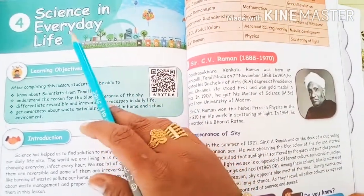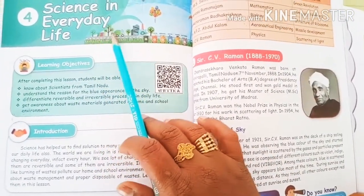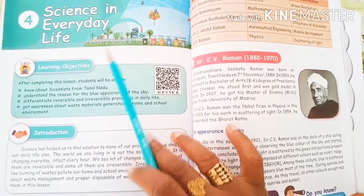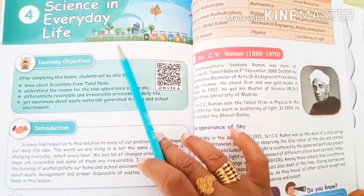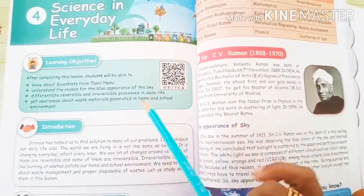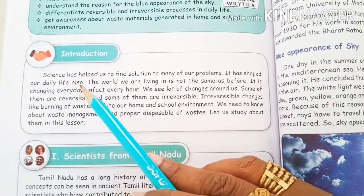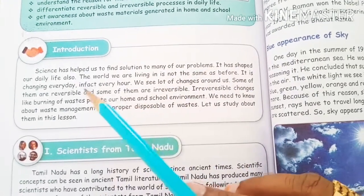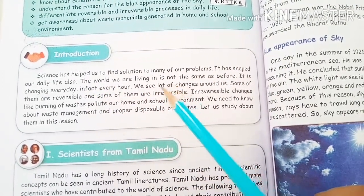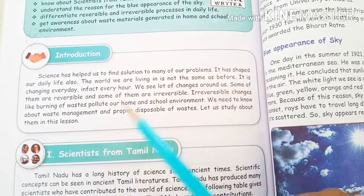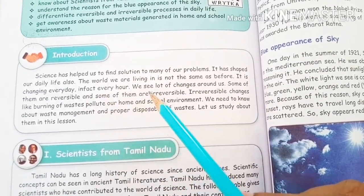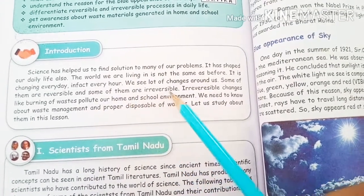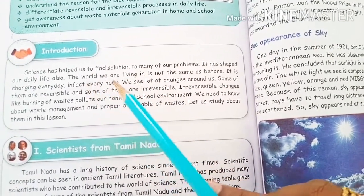Dear children, the lesson name is Science in Everyday Life. By this itself we can understand what is there in the lesson. We are going to learn about how science is useful in our daily life. Science has helped us to find solutions to many of our problems. It has shaped our daily life also. The world we are living in is not the same as before — it is changing every day. Everywhere we see a lot of changes around us. Some of them are reversible and some of them are irreversible. Science plays an important role.